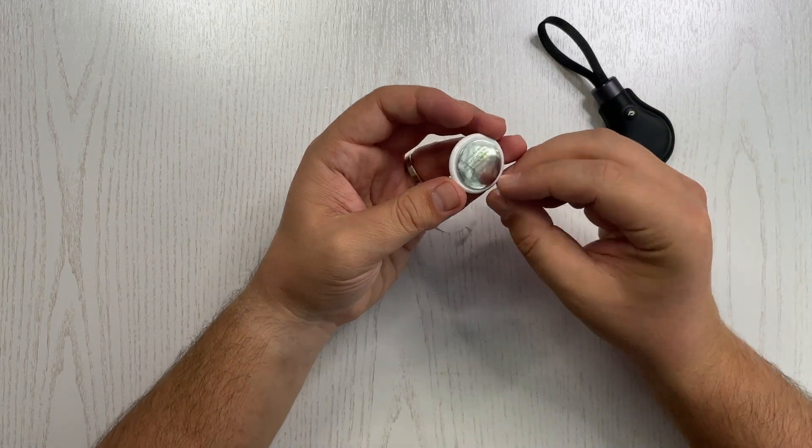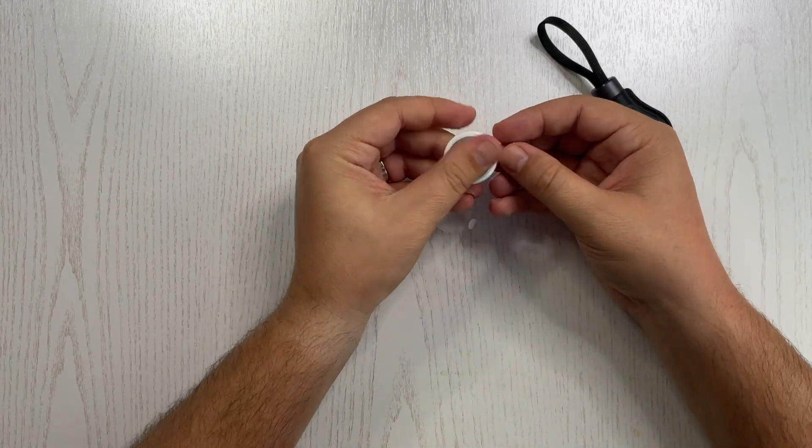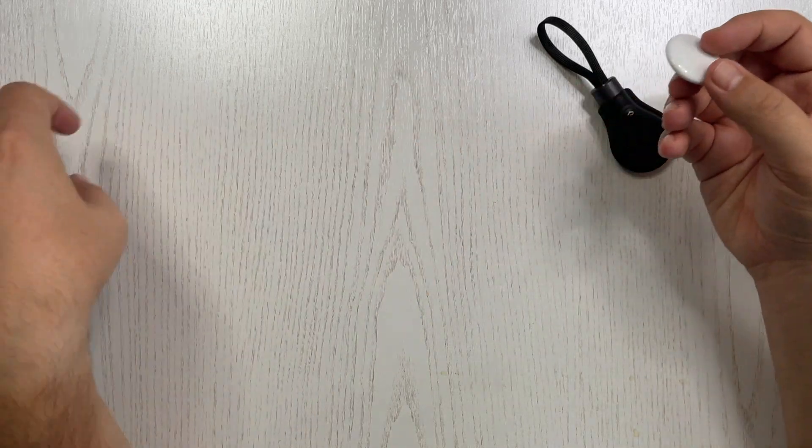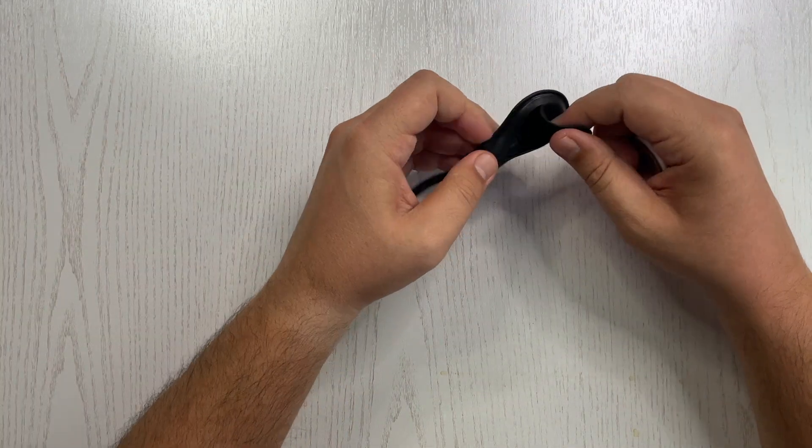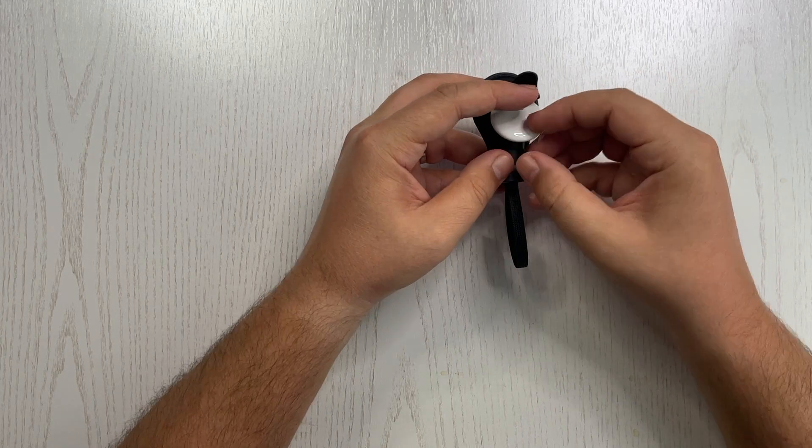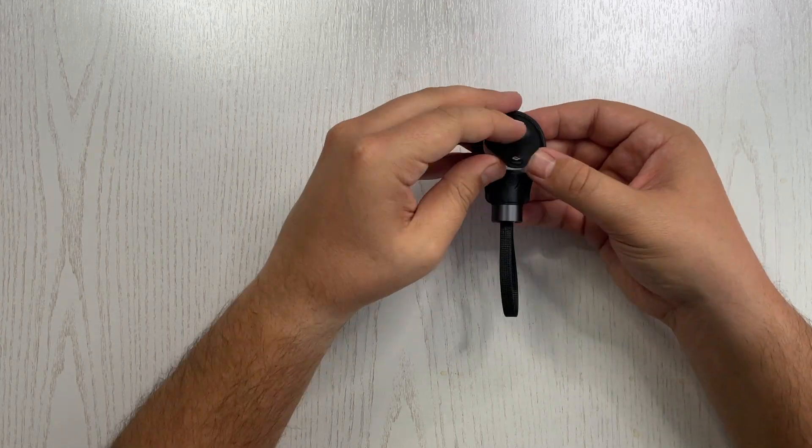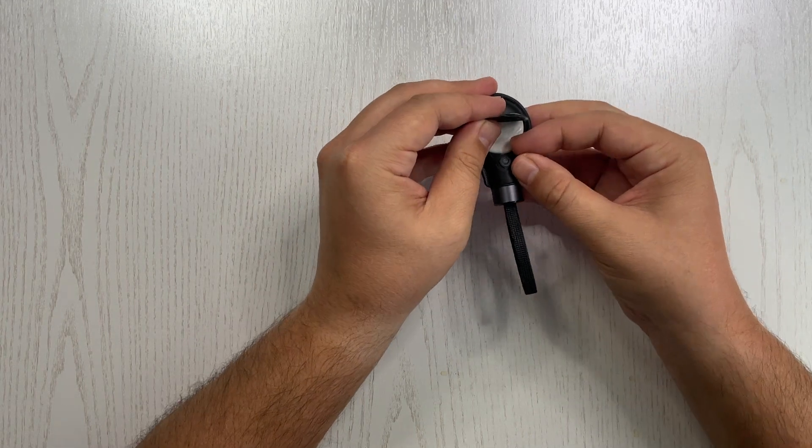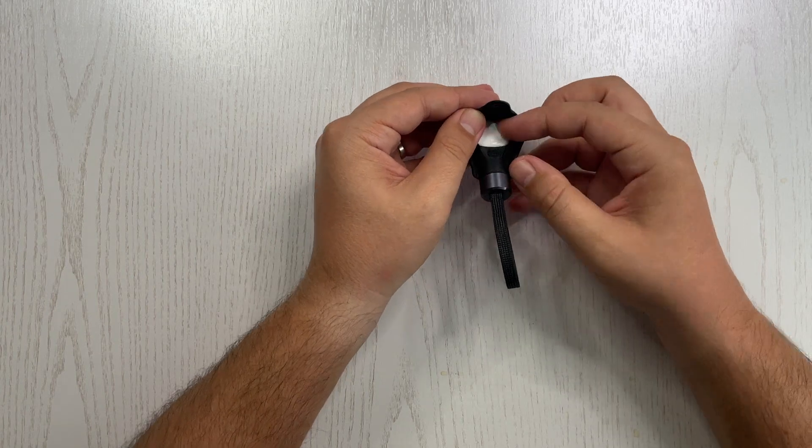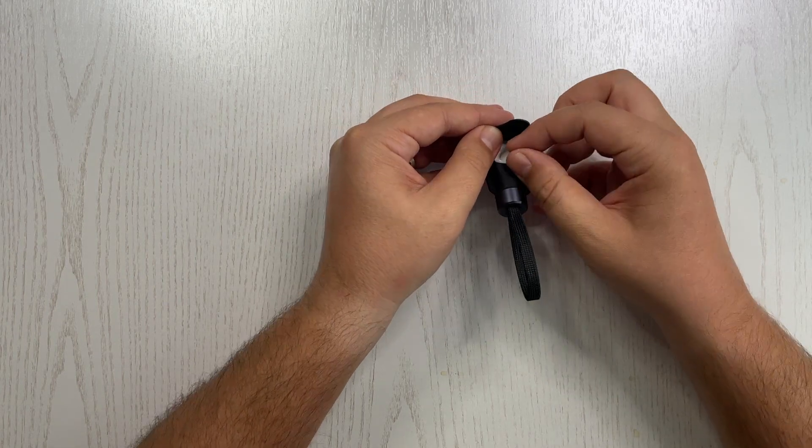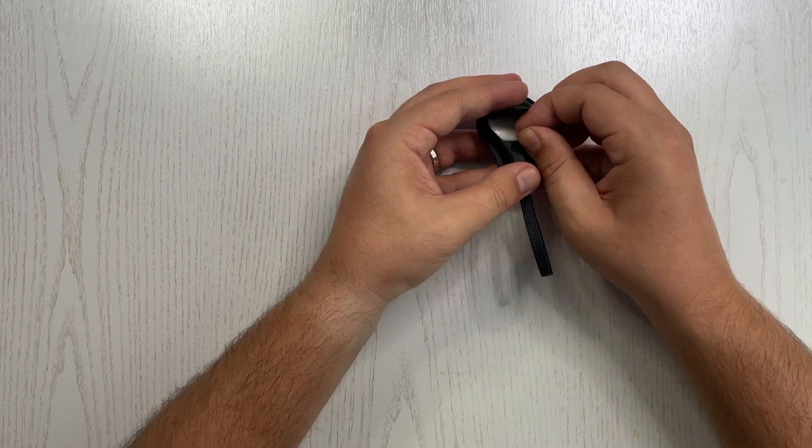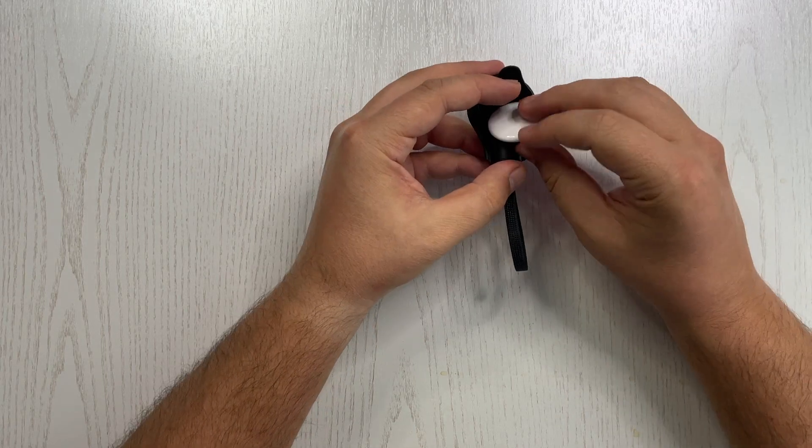So basically this is the one. And there you go. Easy installation. And then we can slide the AirTag inside. And now we have this plastic cover that will be used to easily remove the AirTag.